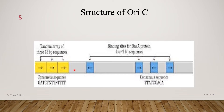These 9 base pair sequences are important because they are known as the binding site for DNA A protein. DNA A protein can recognize these 9 base pair sequences and binds to these sites. Whereas DNA A protein starts unwinding DNA at the 13 base pair sequences.